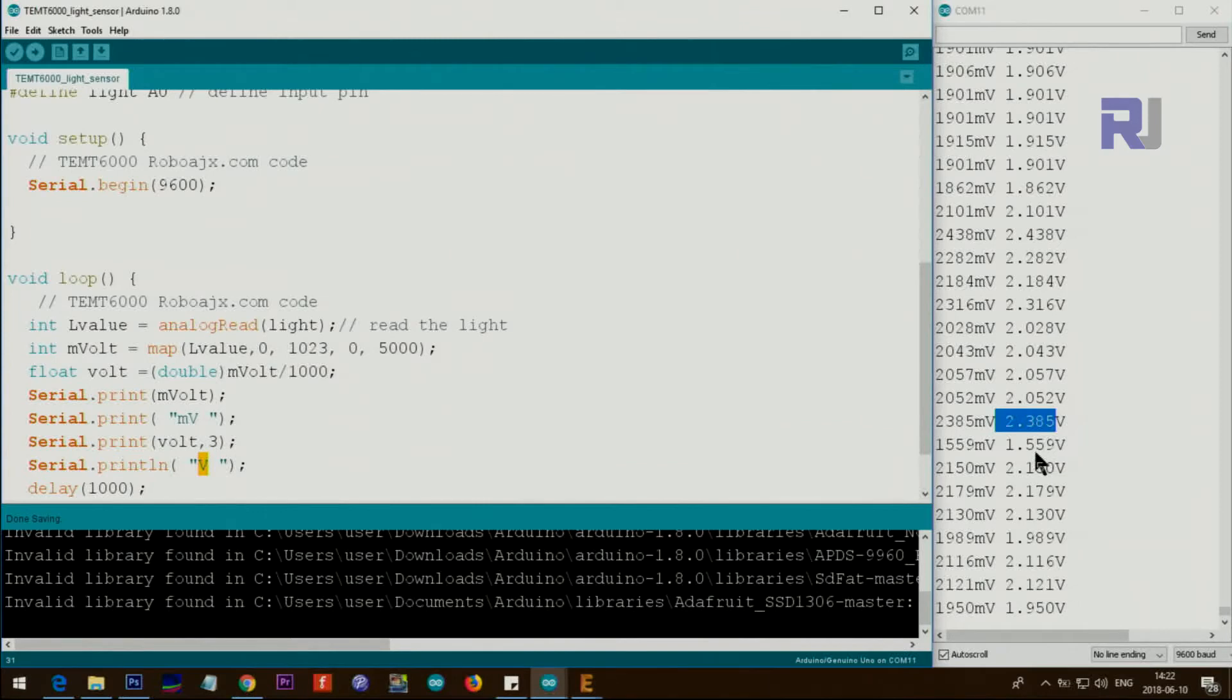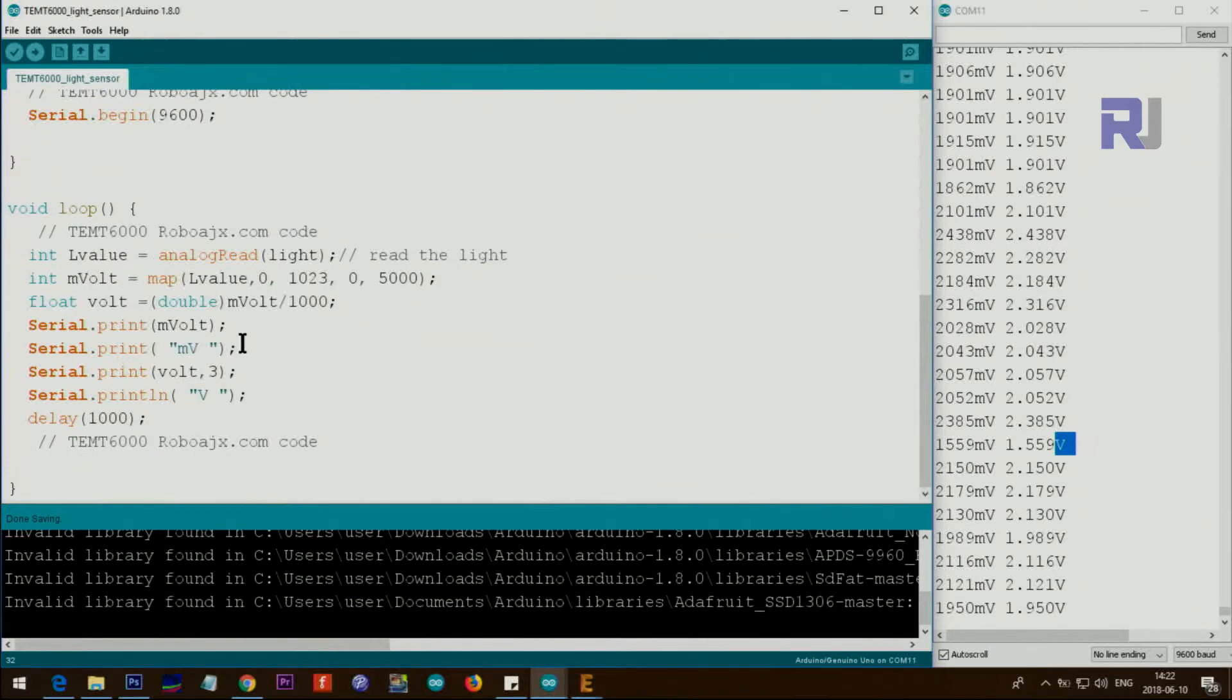We are reading it with a delay of one thousand milliseconds or one second, and then it continues like that. You can control something based on these values. For example, if millivolts is bigger than one thousand three hundred, then you can do something here: turn on a relay, control something, send SMS, whatever you want.